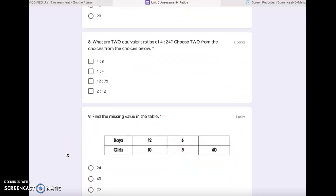Number 8. What are two equivalent ratios of 4 to 24? You are choosing two answers from the choices below: 1 to 8, 1 to 4, 12 to 72, or 2 to 12.